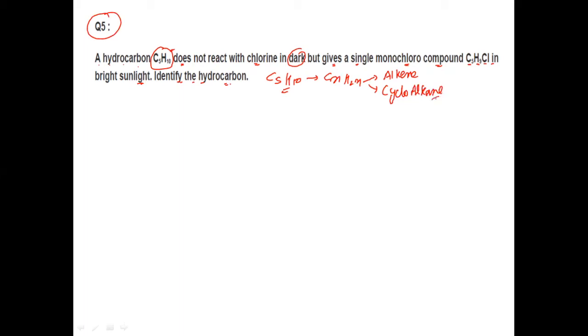Clear? You know that in bright sunlight, all alkenes undergo halogenation reactions, meaning addition of halogen will occur. Here the compound which is forming is...